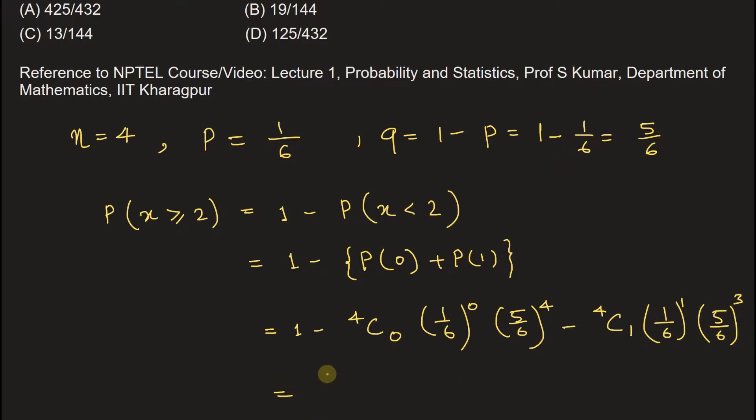This will be equal to 19 by 144. So probability of getting six at least two times will be 19 by 144.